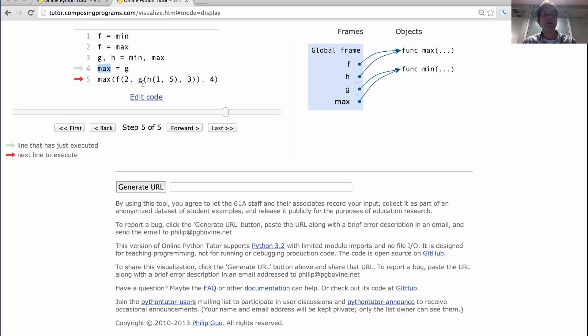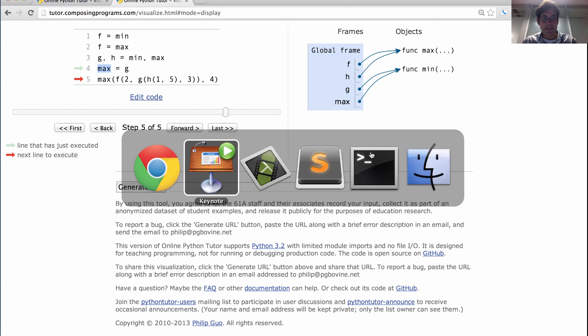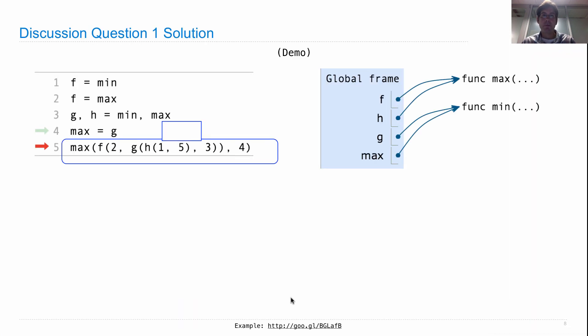So then we say max of f of 2, g of h of 1 and 5, 3 and 4. And that involves evaluating all of these different operand expressions in turn. Before I hit forward, let's just watch how that goes. We can draw an expression tree that evaluates the operator and operand of the call expressions and the operand sub-expressions within them. So remember the rule for evaluating a call expression. First you evaluate the operator, which in this case is max the name refers to the function which minimizes. Then we evaluate the operands. The first operand looks like that.